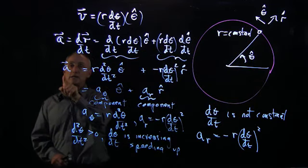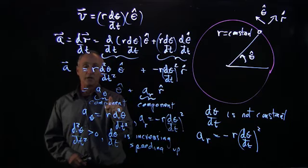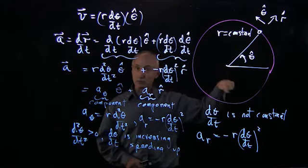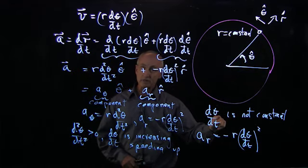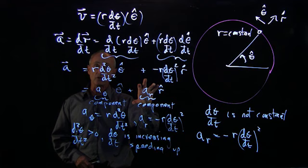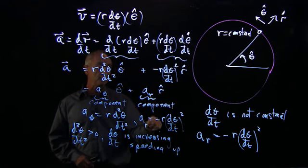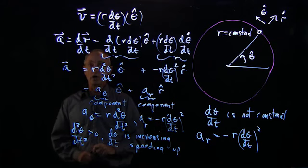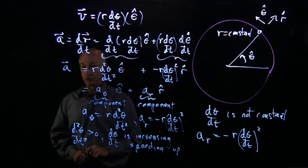So again, the acceleration has two components, a tangential component. And that depends on the type of circular motion we're talking about, whether dθ/dt is constant or not. And it always has a non-zero inward radial component, given by the component minus r (dθ/dt) squared, regardless of whether it's speeding up or slowing down.